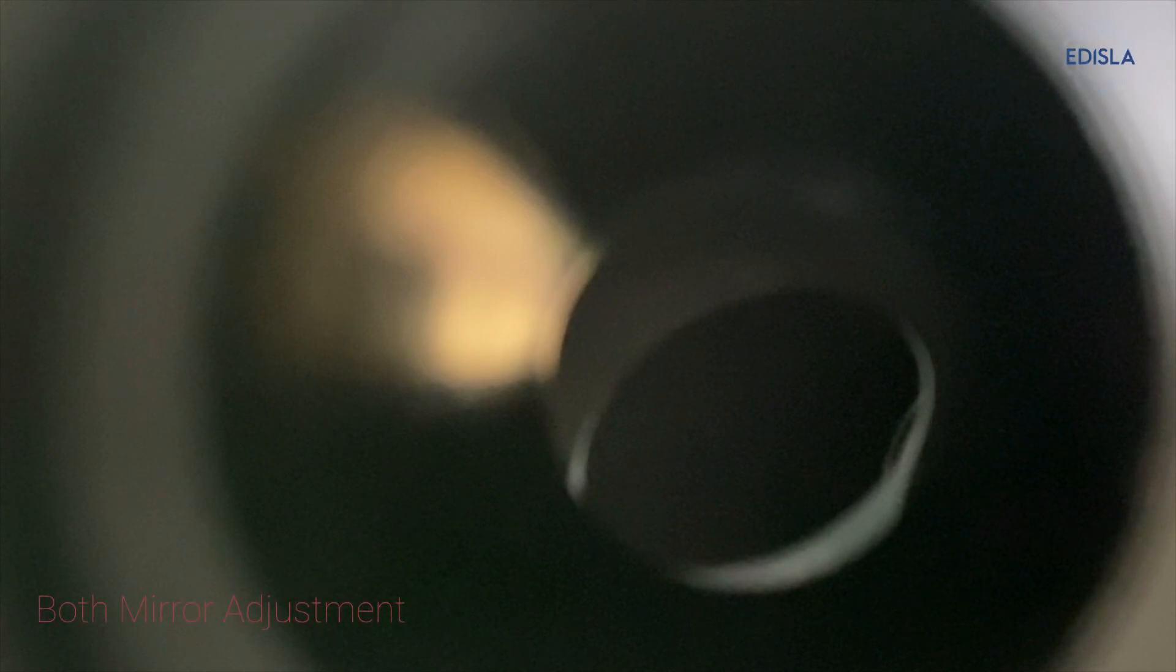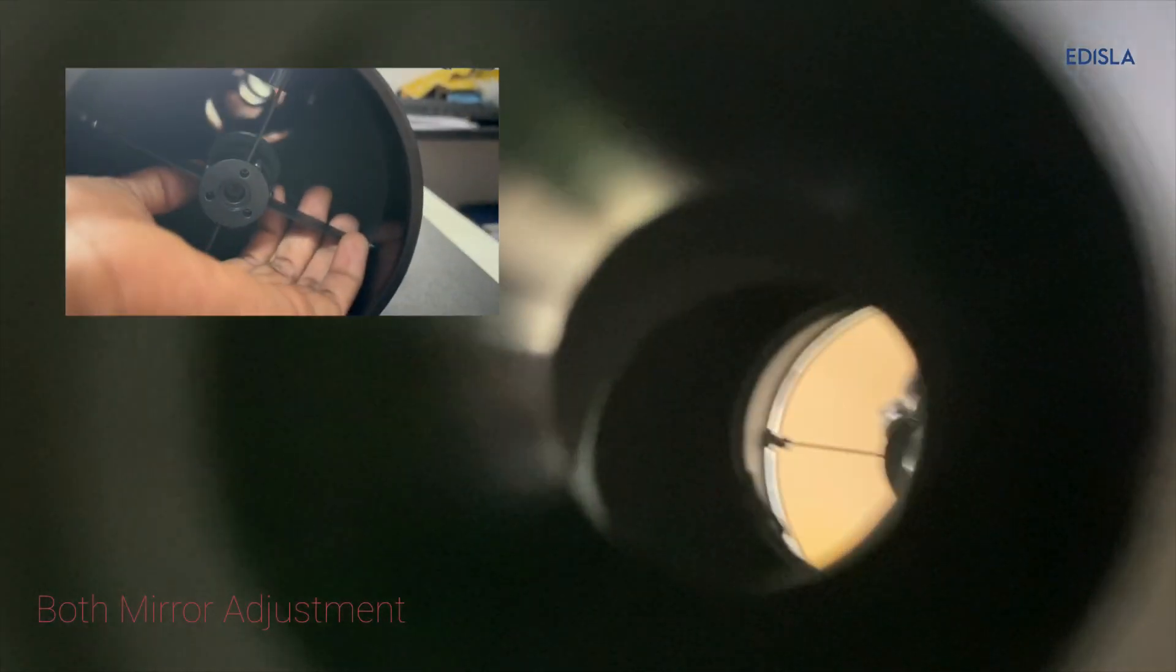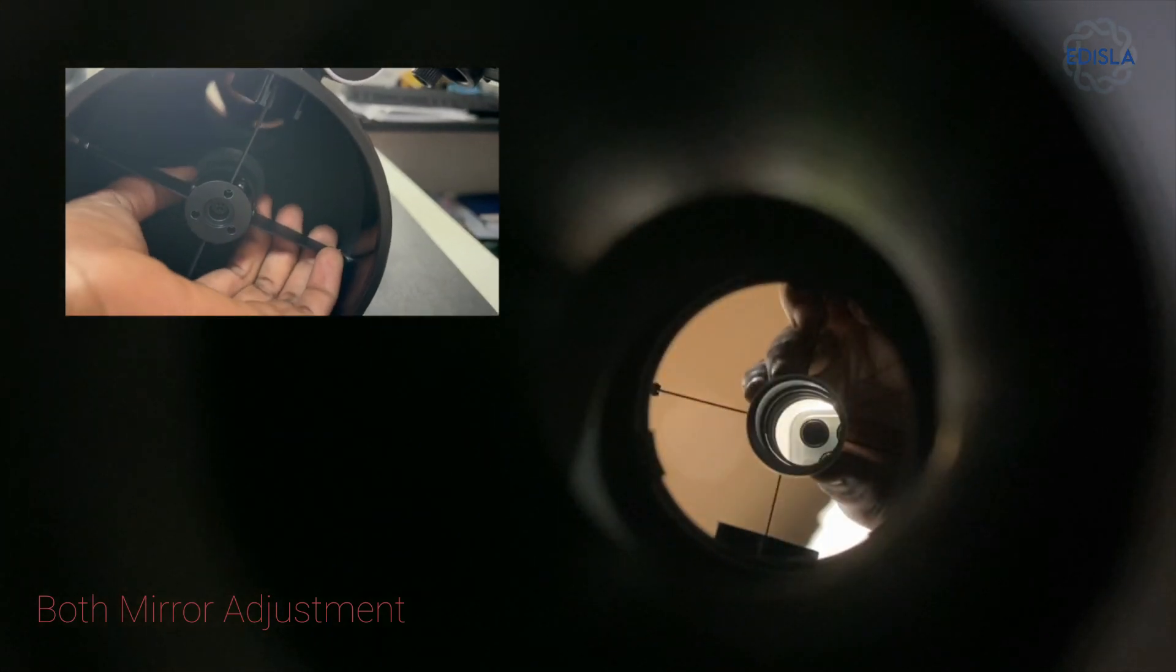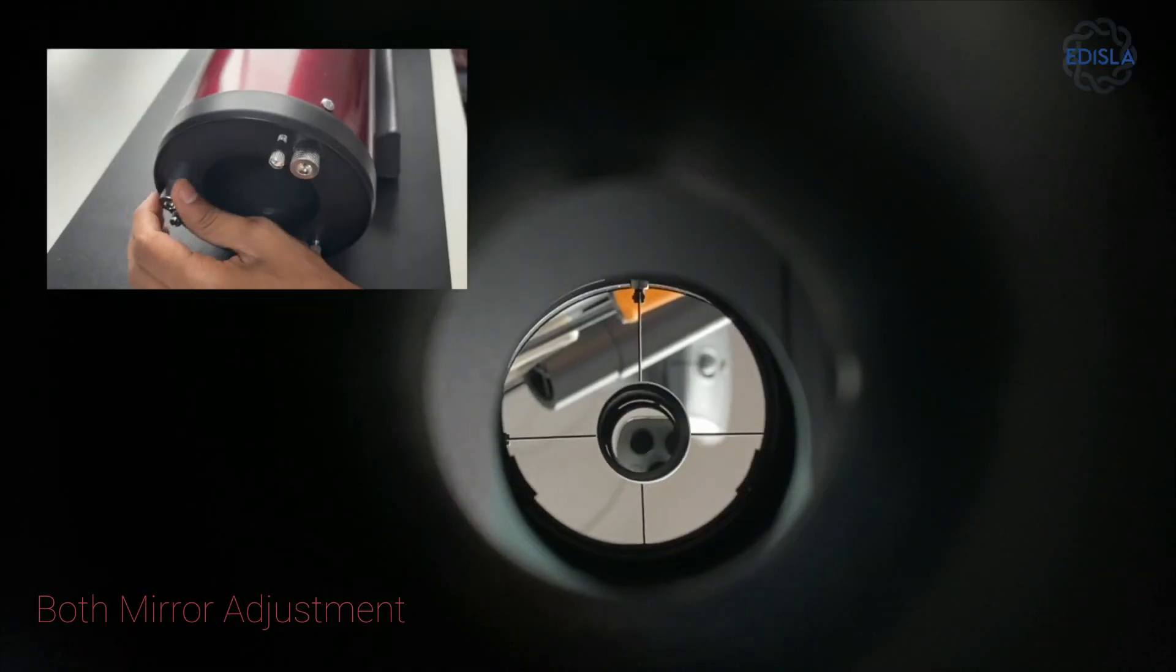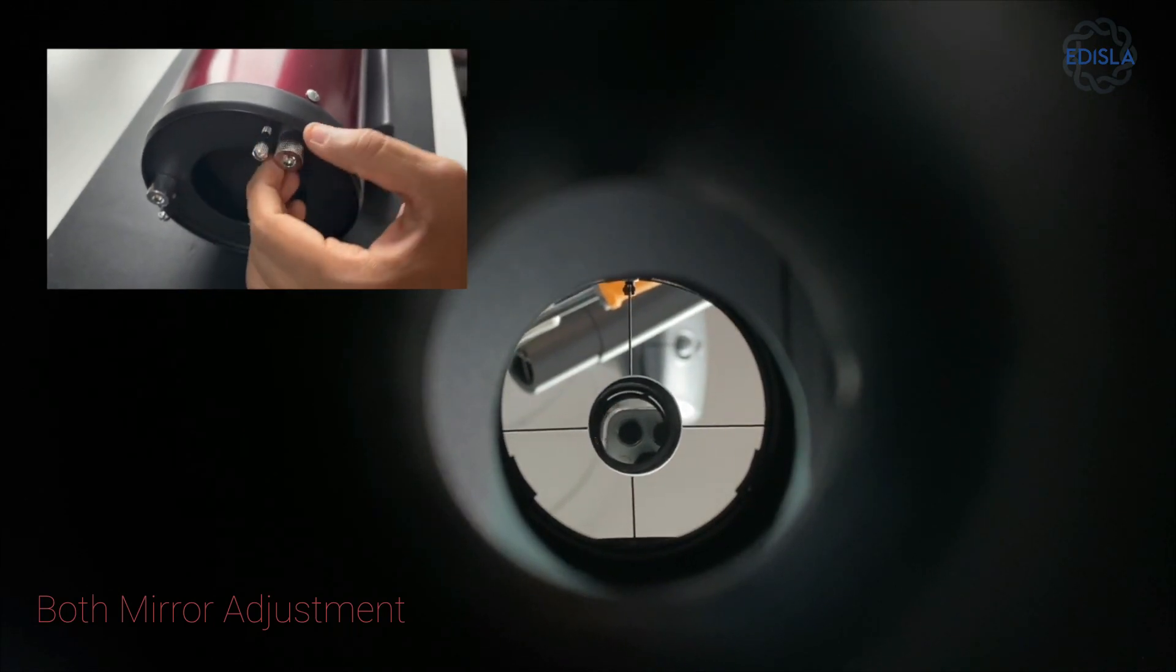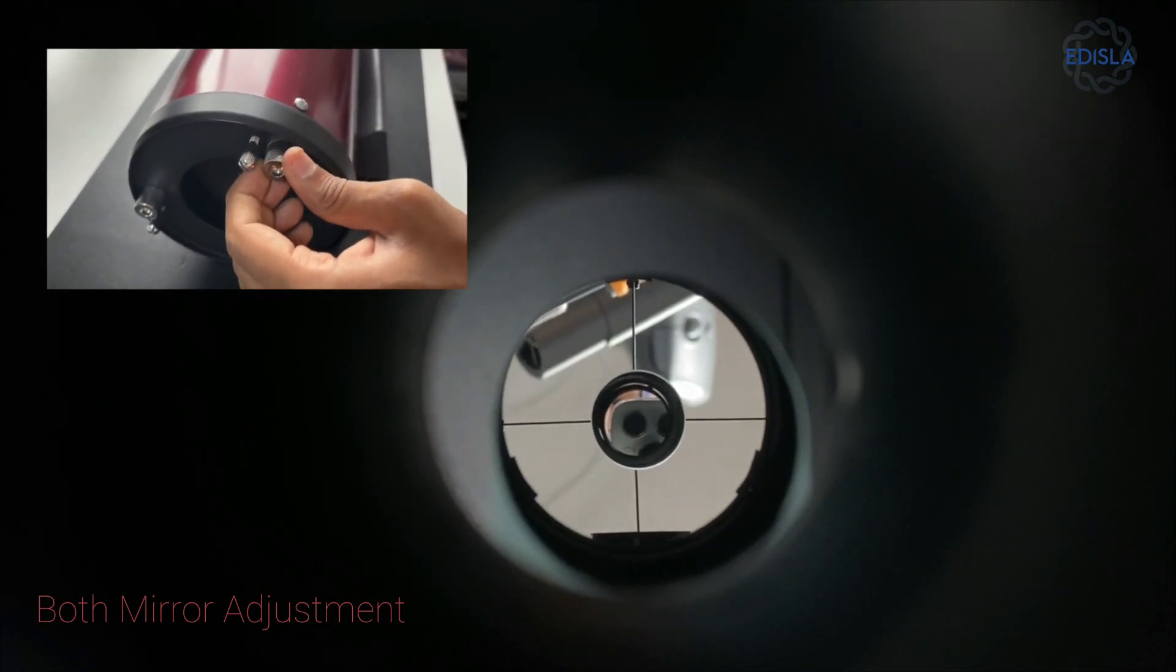When both mirrors are misaligned, begin by adjusting the secondary mirror first, then move on to align the primary mirror. This is essentially a recap of the previous demonstrations. Start with the secondary mirror and finish with the primary mirror.